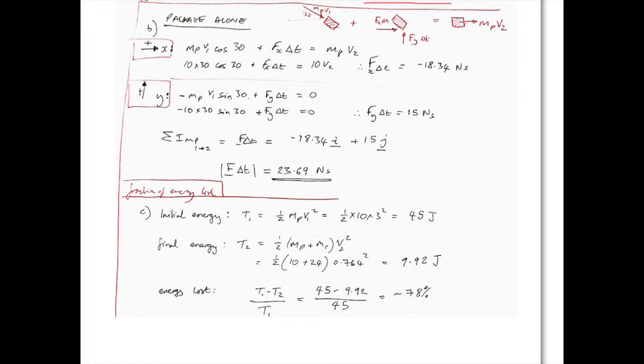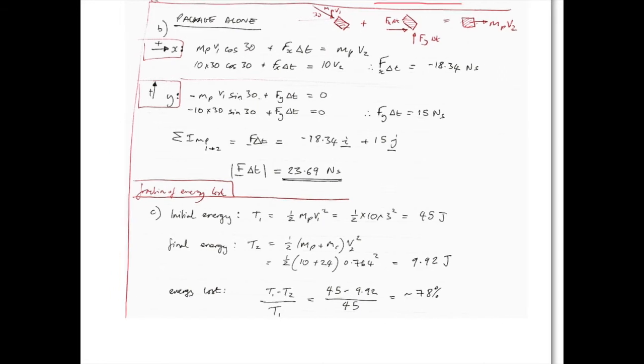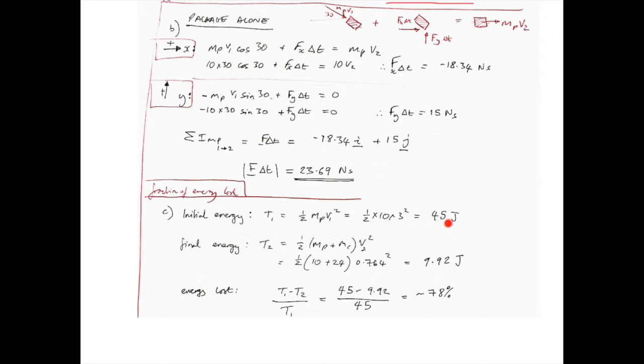And finally, in part c, we're asked to find out how much energy is lost in the system, and to do this, we work out the initial energy, the initial kinetic energy, which since the cart is stationary, is going to be zero for the cart, but for the package it's 45 joules.